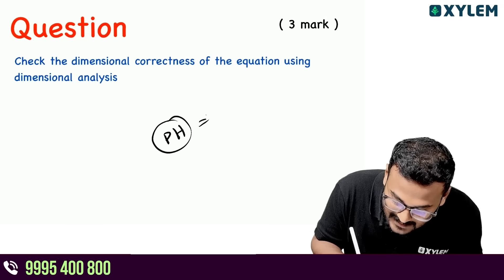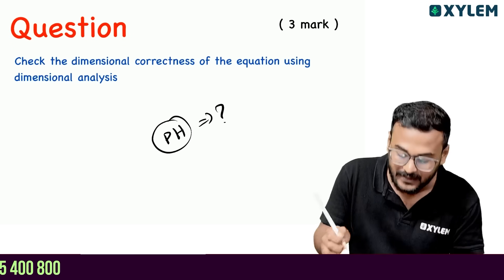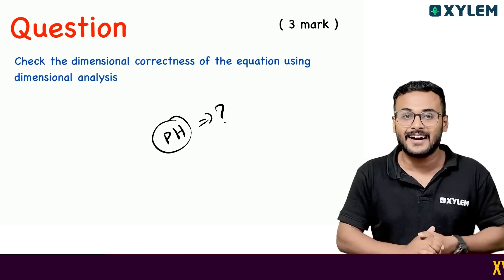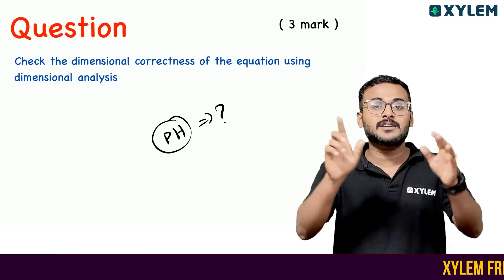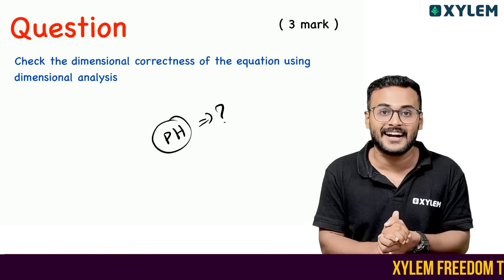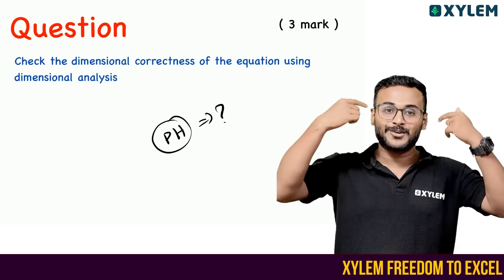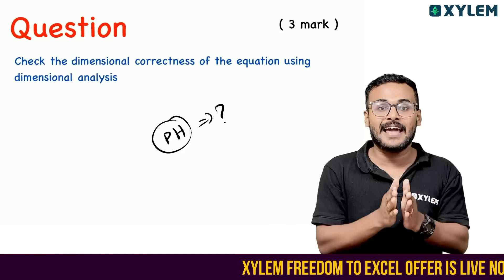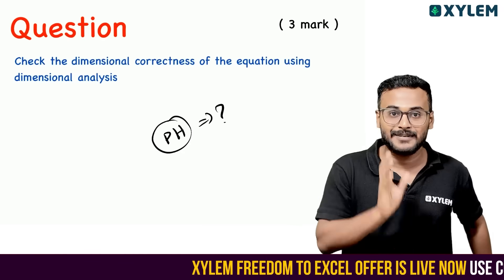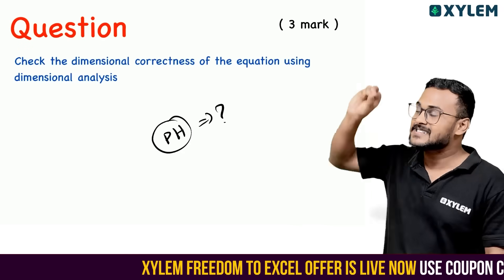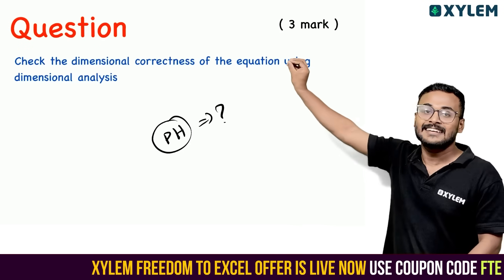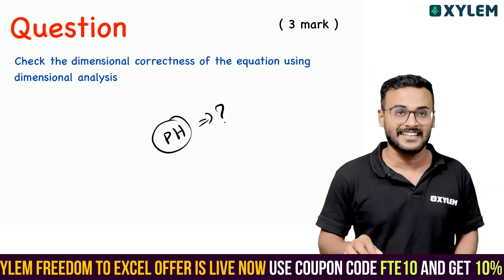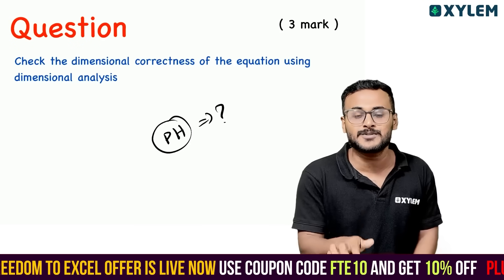What is the Principle of Homogeneity? If an equation is dimensionally correct, all terms must have the same dimension. That's how we check dimensional correctness, and that's how you will answer it.